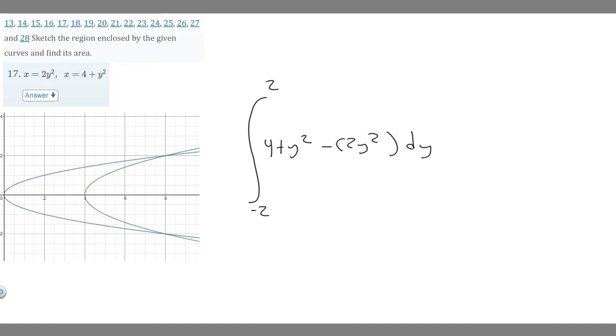So y² minus 2y² equals -y². We now have 4 - y² inside the integral.